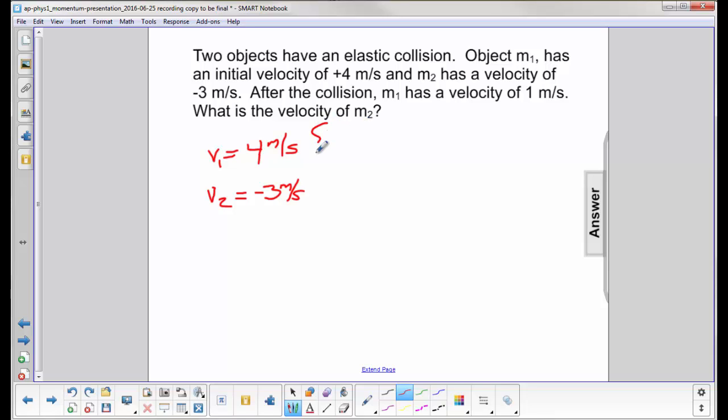After the collision, M1 has a velocity of 1 meter per second. So V1 prime is equal to 1 meter per second. And we want to find the velocity of M2, the final velocity.